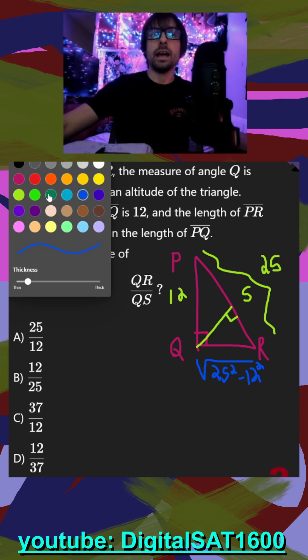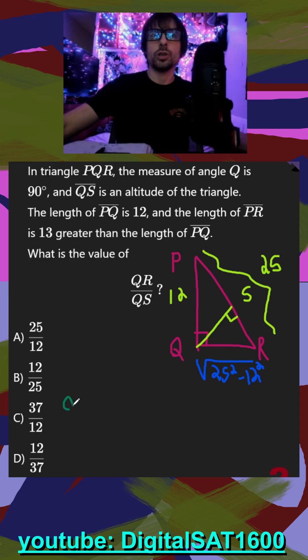But our altitude rule now is going to be your QS, your altitude, is going to be equal to your two legs multiplied. So PQ times QR, and then divided by the hypotenuse, which is just going to be 25.